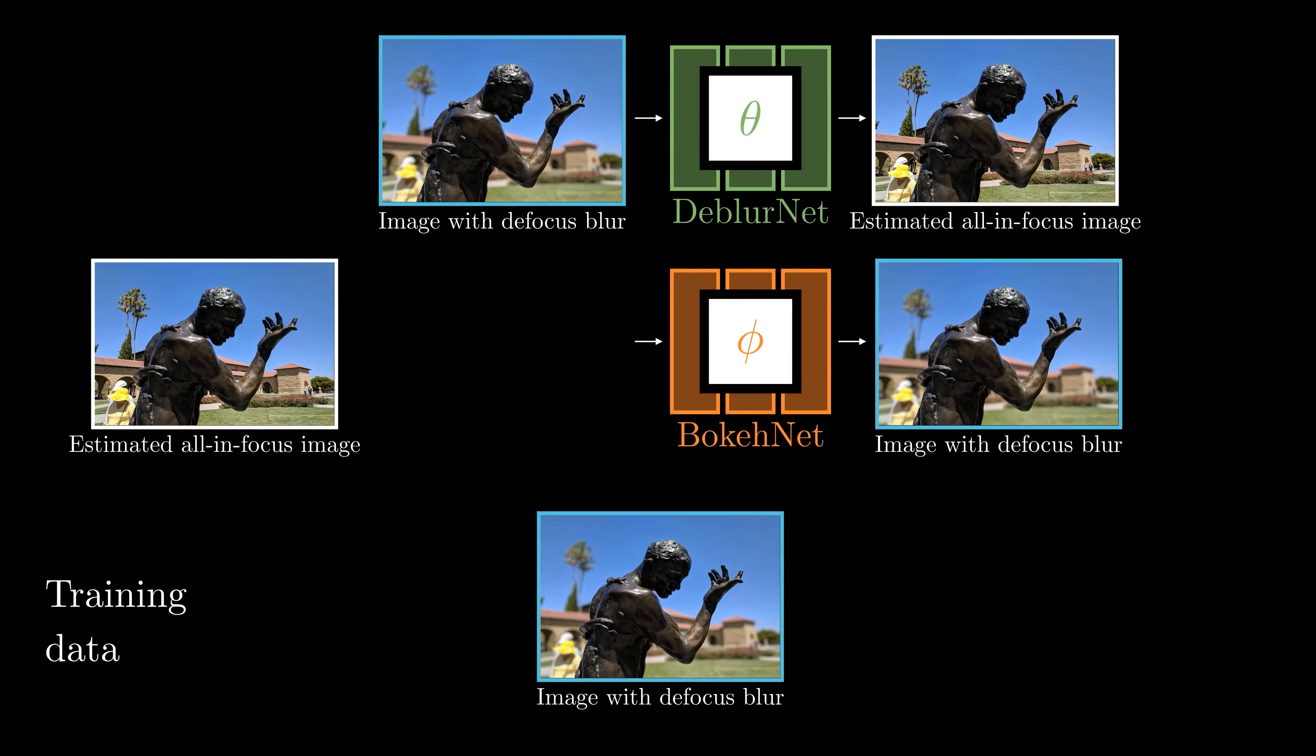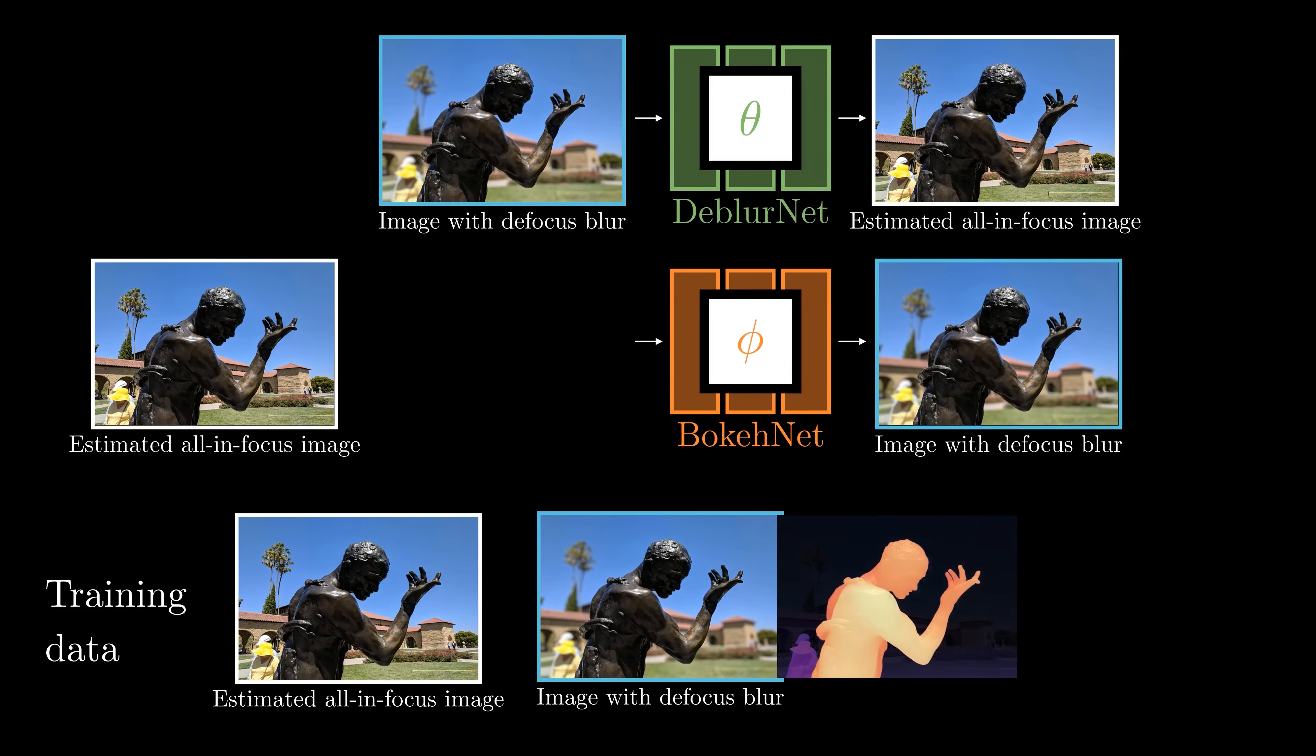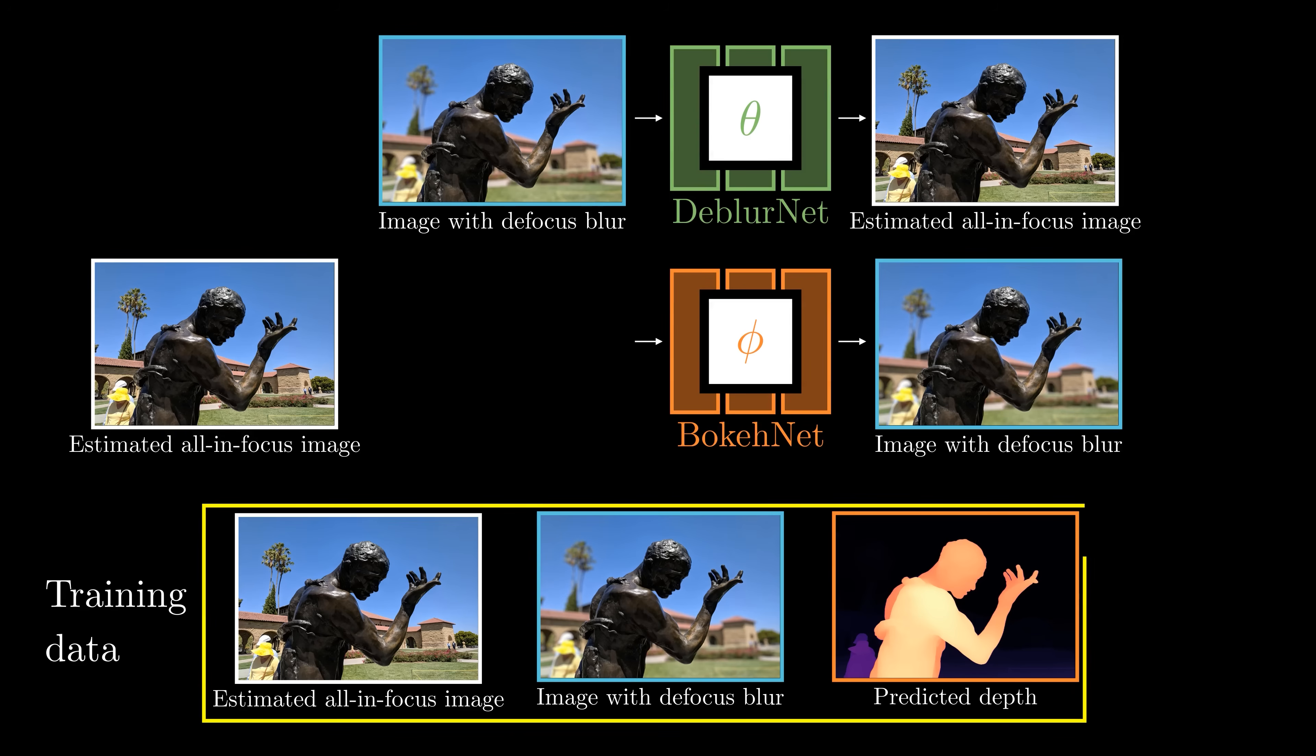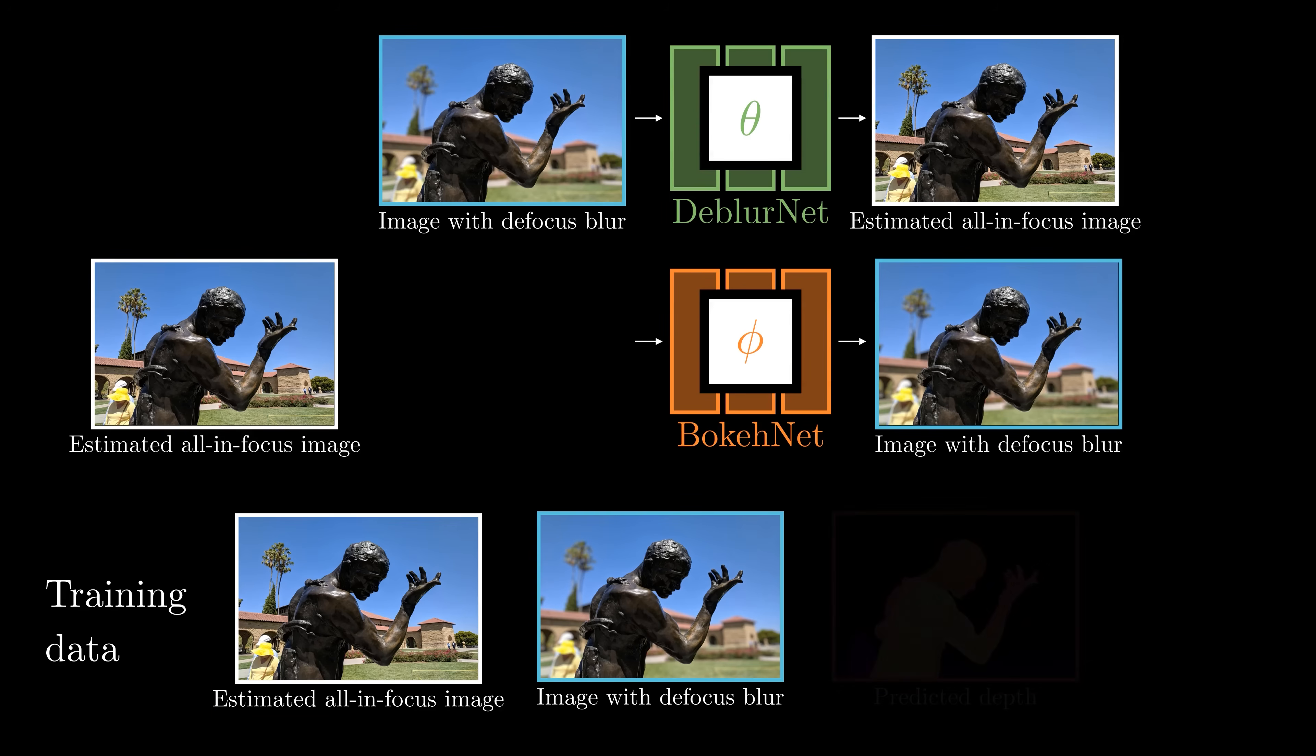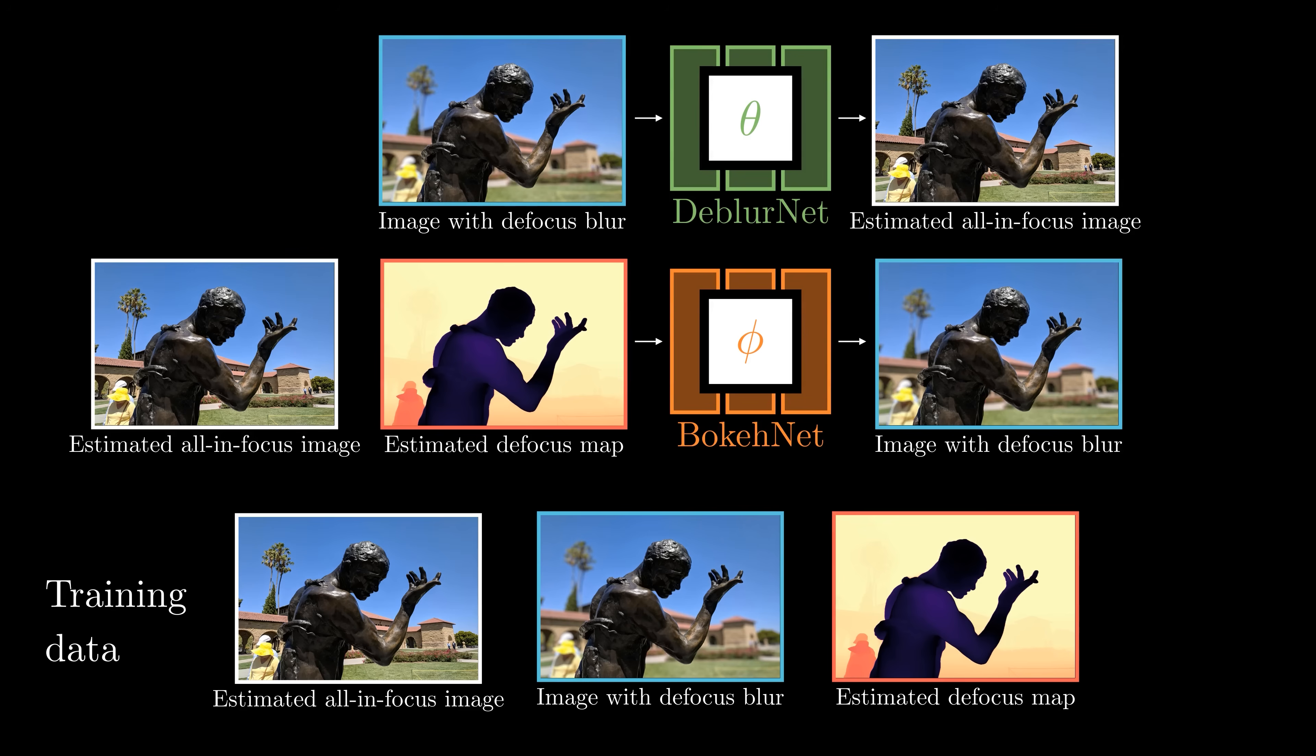But for this, we need to get the corresponding defocus map. Fortunately, using the all-in-focus image, we can predict its depth map and infer the focusing parameters, such as aperture size and focus plane positions that will reproduce the defocus characteristics observed in the input image. This enables us to train bokeh net to create images with realistic defocus blur.